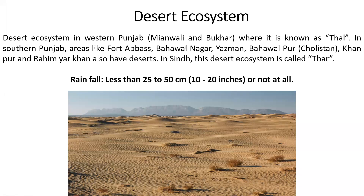In Pakistan, the desert ecosystem is found in western Punjab, in the Mianwali and Bakhar area — it is called Thal. In Punjab, areas like Fortabbas, Bahawalpur, it is called Cholistan. Rainfall here is very low, meaning less than 10 to 20 inches, or about 35 to 50 centimeters.